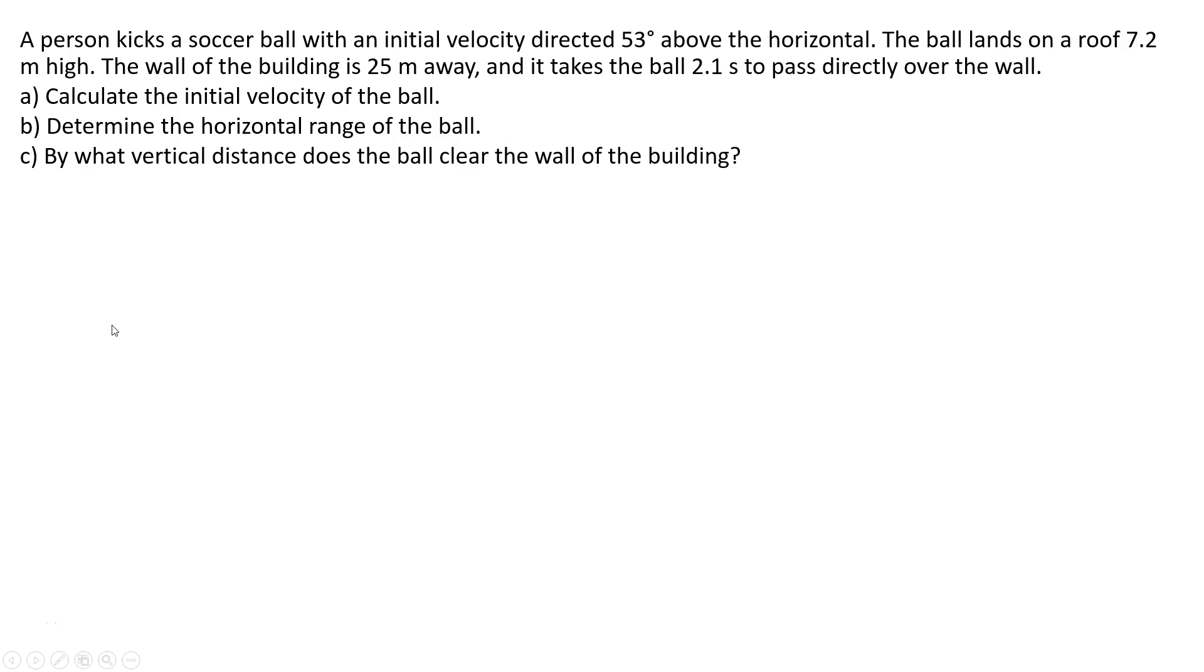In this video I'm going to go over the first part of a projectile motion problem. A person kicks a soccer ball with an initial velocity directed 53 degrees above the horizontal. The ball lands on a roof 7.2 meters high.